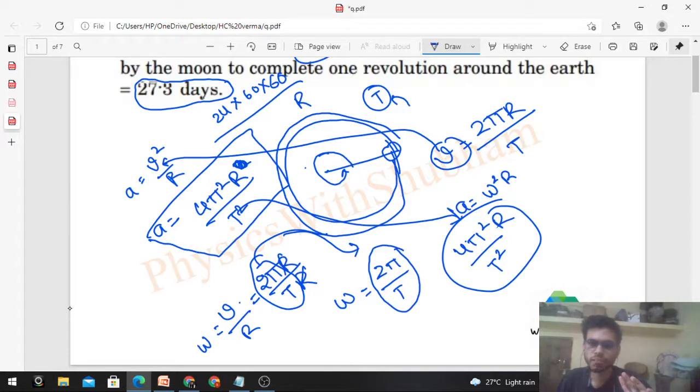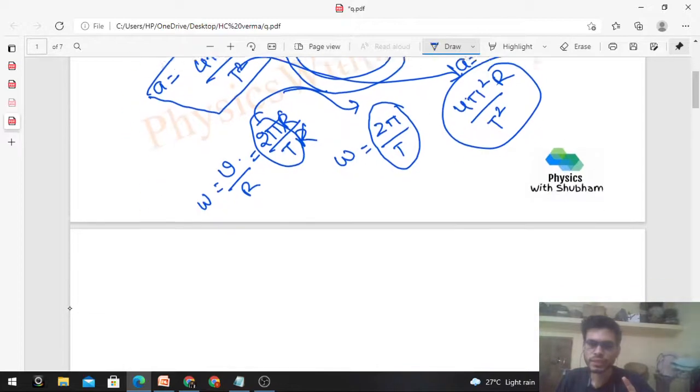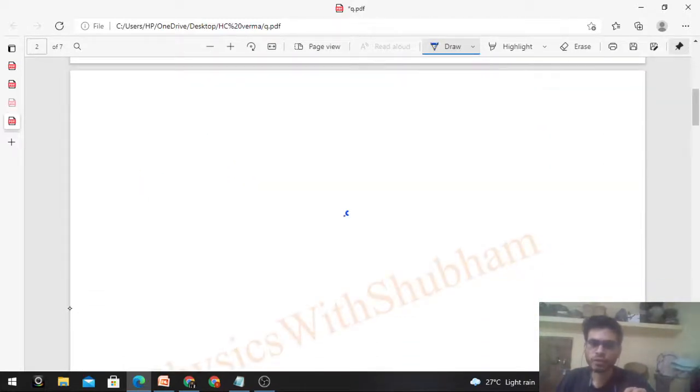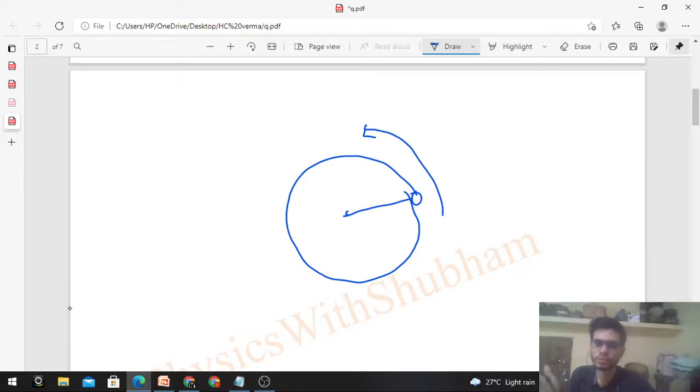We should know whether the moon's circular motion is anticlockwise or clockwise. If it rotates anticlockwise, you can find out the direction of angular velocity using the right-hand thumb rule.